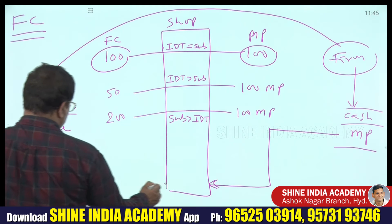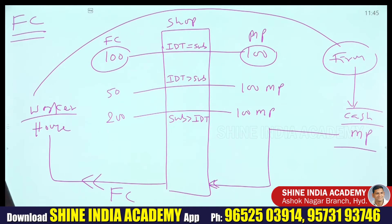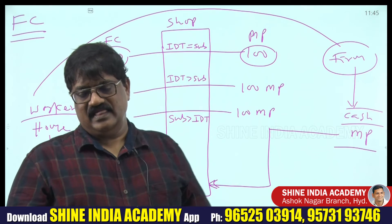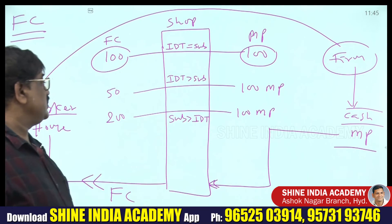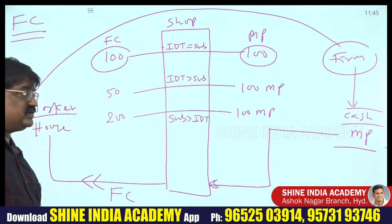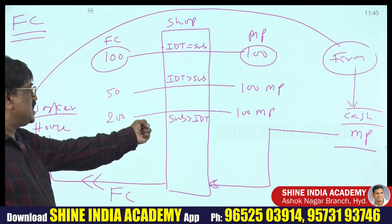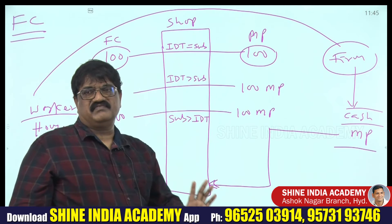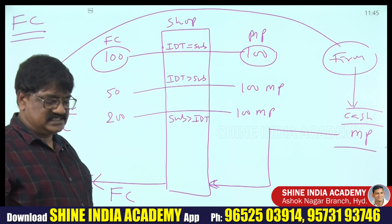So MP moves to home as FC. FC stands for factor cost in terms of goods and services. MP is given by the firm (in cash); FC is given by the shop (in goods). Goods are purchased at the shop by providing MP.